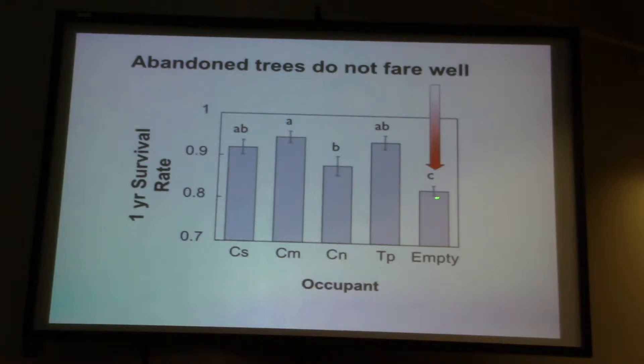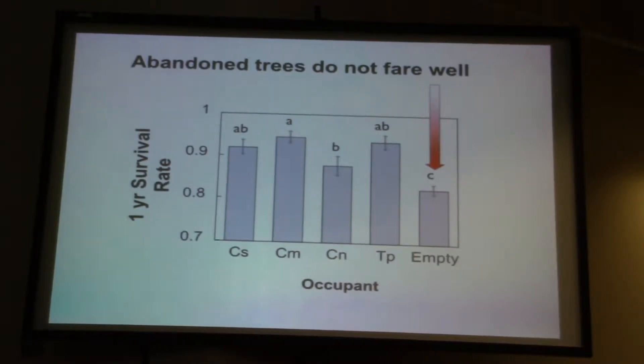Ant species are empty. If you're left empty, even for a year, your probability of survival really plummets. So it's not going to be advanced. It's better to have some ant on you than no ant.